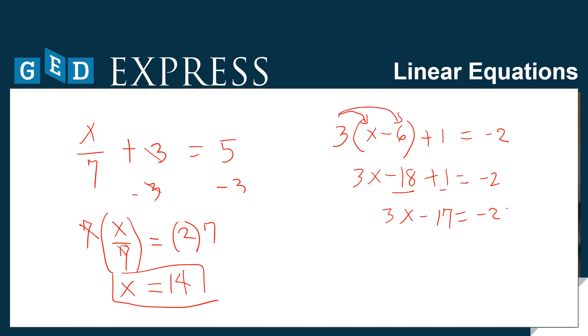So we have 3x minus 17 equals minus 2. Now, let's undo minus 17 by adding both sides by 17. So we have plus 17. Then we have 3x on the left side and we have 15 on the other side. Then to undo multiplication, let's divide by 3 by 3. Well, x equals 15 divided by 3 is 5. So the value of x is 5.